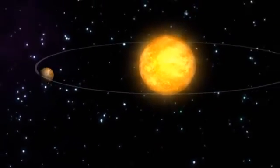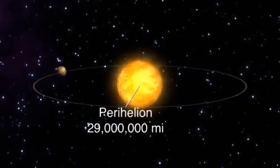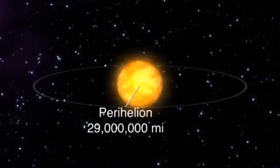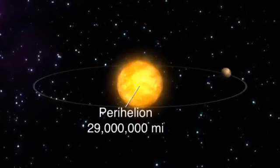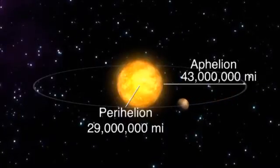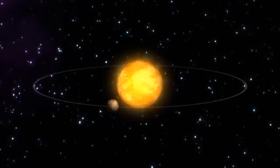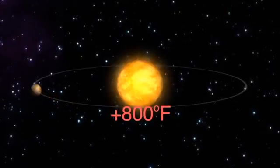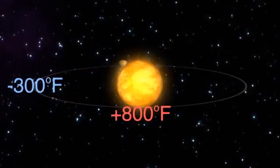Mercury has a highly elliptical orbit. At its closest point, it's 29 million miles from the sun, but at its farthest point, it's 43 million miles away. For this reason, surface temperatures can vary from 800 degrees Fahrenheit to a frigid 300 degrees below zero.